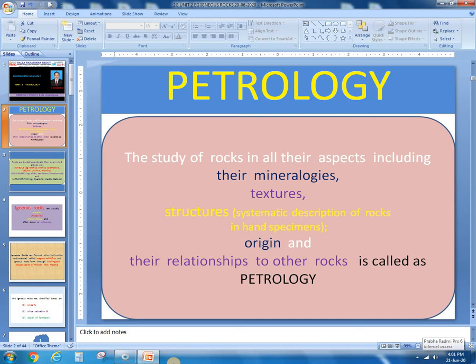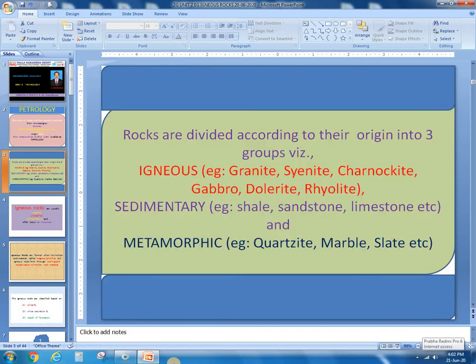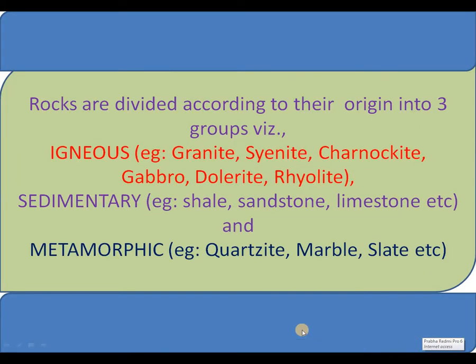Petrology means the study of rocks in all their aspects: mineralogy, structures, origin and their relationship to other rocks. Rocks are divided according to their origin into three groups. They are Igneous Rocks, for example Granite, Syenite, Charnockite, Gabbro, Dolerite, Rhyolite, etc.